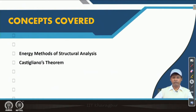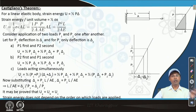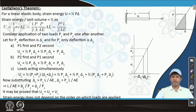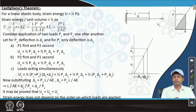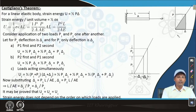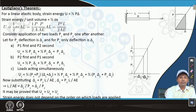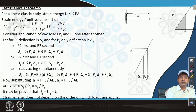Castigliano's theorem is the main topic. Let us try to establish it first. We are considering again one bar axially loaded by P, of length l and cross-section A. The stress-strain curve or load-deflection curve is shown here. The strain energy for a linear elastic body is equal to half P delta. Strain energy per unit volume is generally defined as half of sigma times epsilon.